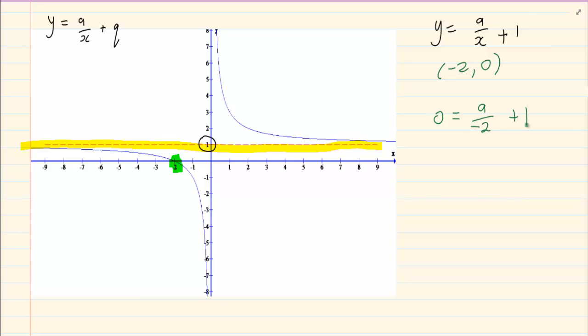So we have 0 equals a over minus 2 plus 1. Now again, it's a matter of solving for the unknown. So we have minus 1 equals a over minus 2. Again, if you are not familiar with what I am doing right now, go back and learn your solve for x. a equals 2.